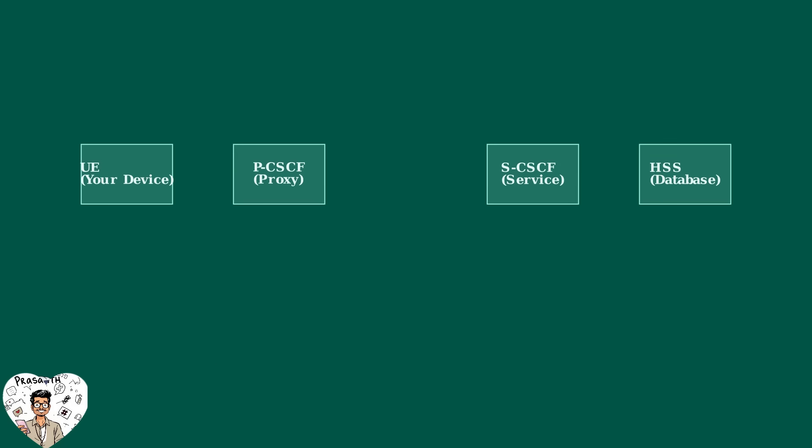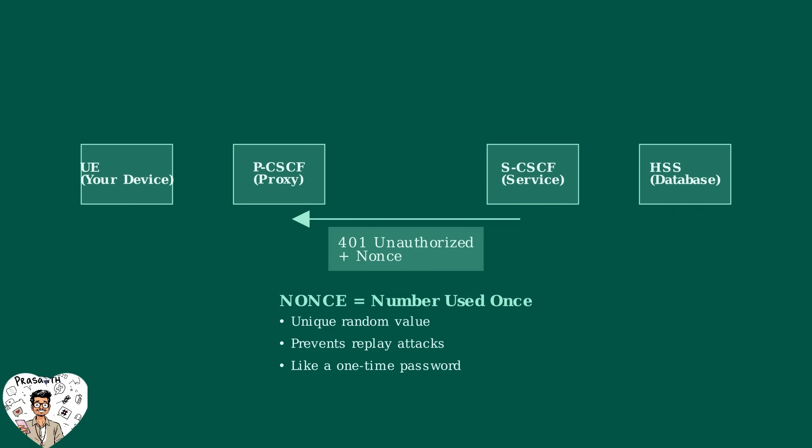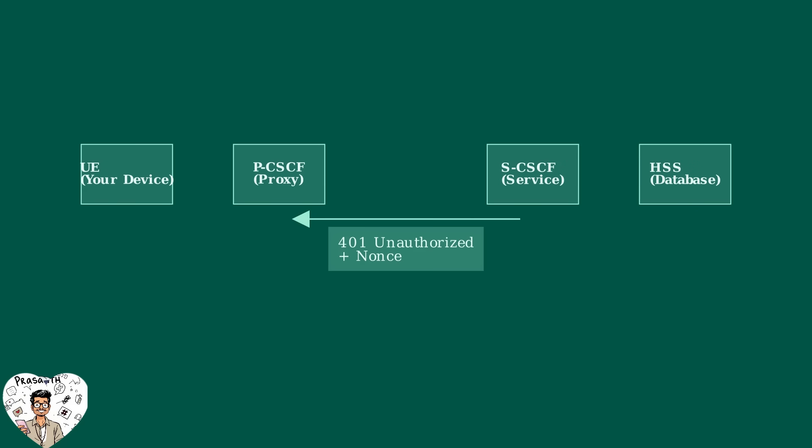Now we reach a critical security step in IMS registration: the authentication challenge. This process ensures that only authorized users can access the network. The authentication challenge begins when the SCSCF sends a 401 Unauthorized response back to your device. This response contains a special security token called a NONCE — which stands for Number Used Once — a unique random value that prevents replay attacks. Think of it like a one-time password that expires immediately after use.